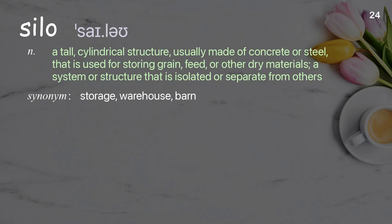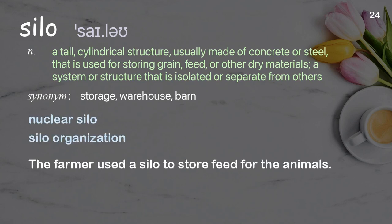Silo. A tall, cylindrical structure, usually made of concrete or steel, that is used for storing grain, feed, or other dry materials; also a system or structure that is isolated or separate from others. Examples: nuclear silo, silo organization. The farmer used a silo to store feed for the animals.